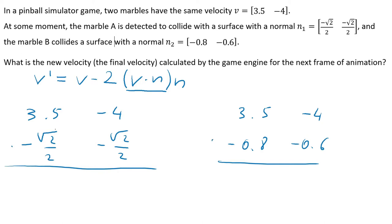Dot and dot. 3.5 times square root of 2 divided by 2. It is 1.75 square root of 2 plus 2 square root of 2. And the second dot product is here. 3.5 times 0.8 is 2.8, negative 2.8.